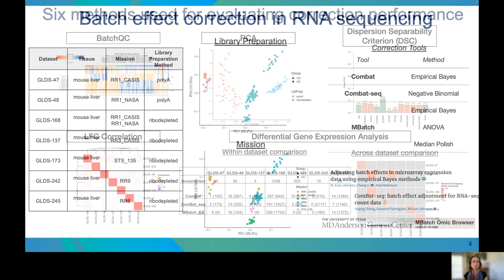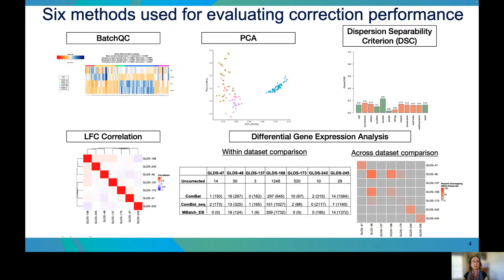We evaluate the performance of these correction methods using six different criteria: Batch QC, PCA, dispersion separability criterion — which describes the clustering within versus between batches — correlation of log-fold change between flight and ground control samples across all datasets, and the comparison of differentially expressed genes between flight and ground control within each dataset before and after correction, or across all datasets.